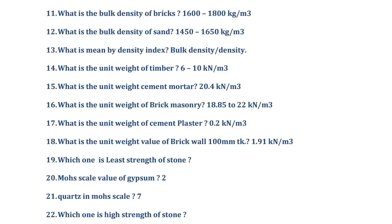Please try to remember these important unit weight values: timber is 6 to 10 kN/m³, cement mortar is 20.4 kN/m³, brick masonry is 18.85 to 22 kN/m³, cement plaster is 0.2 kN/m³, and brick wall for 100 mm thick is 1.91 kN/m³.